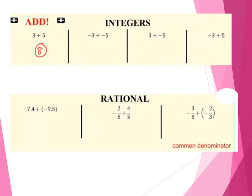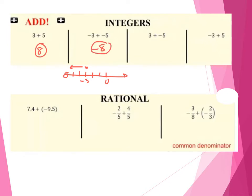Next one, we've got negative 3 plus negative 5. What do we do when we add two negatives together? You can think old school and go back to a number line. We'll say 0, you've got negative 1, 2, and 3. So we're starting at negative 3, then we're adding to it negative 5. Adding a negative means we are going to get more negative, so we're going to head on a number line to our left. So negative 3 adding negative 5 gives us negative 8.